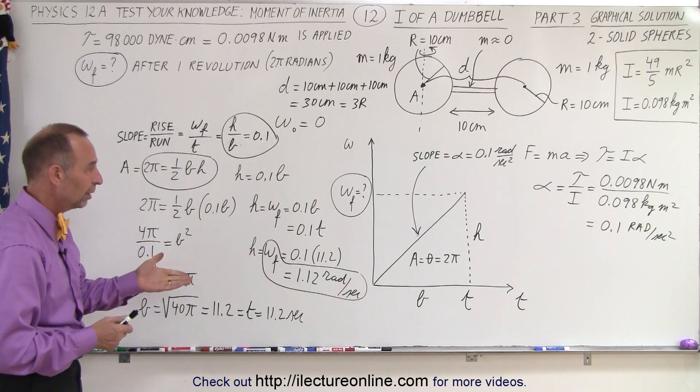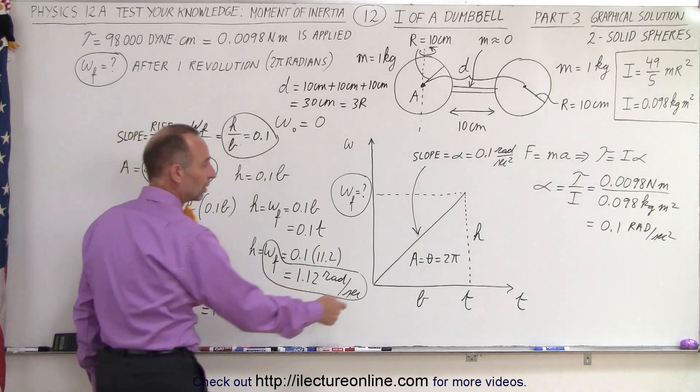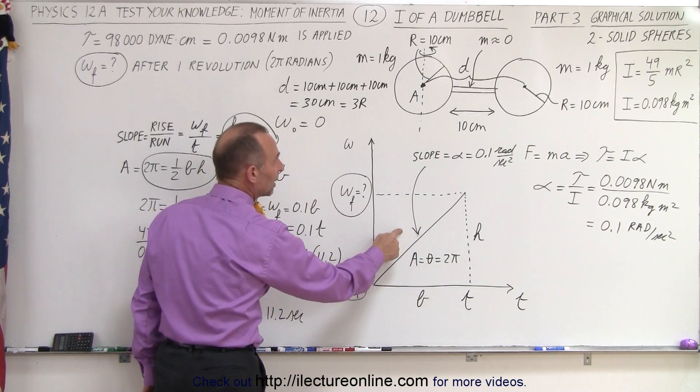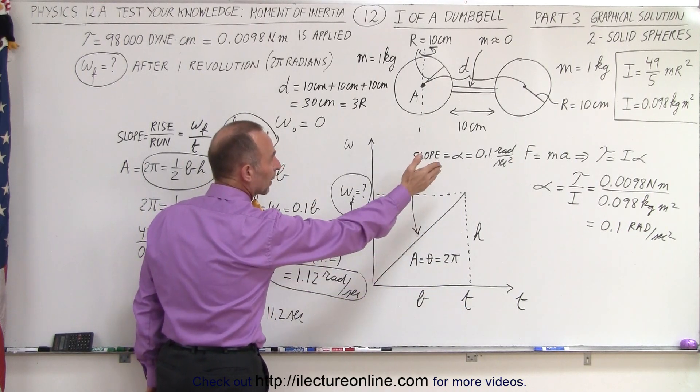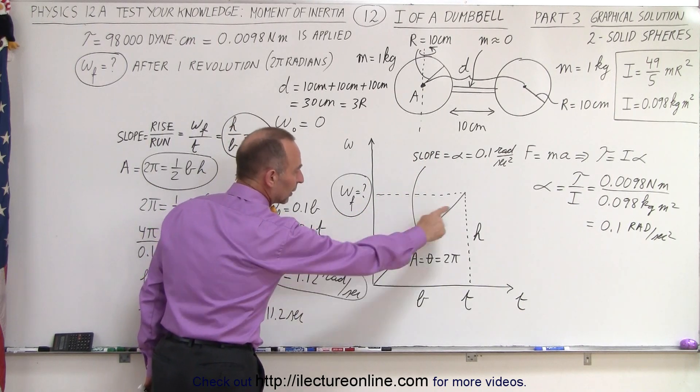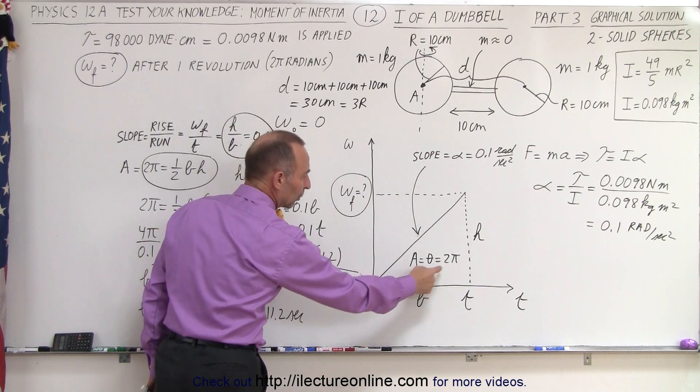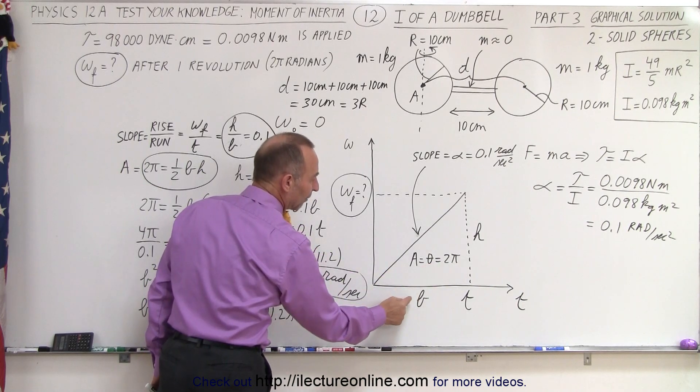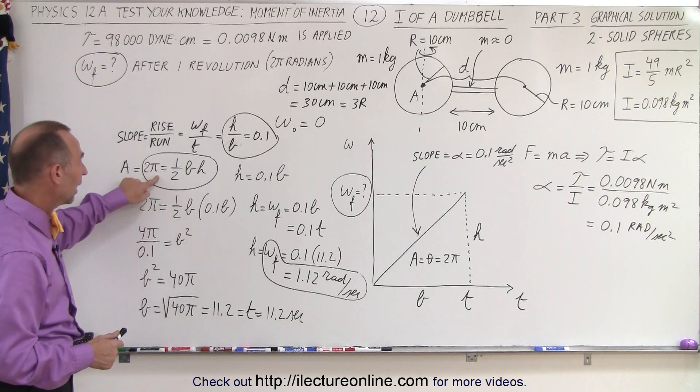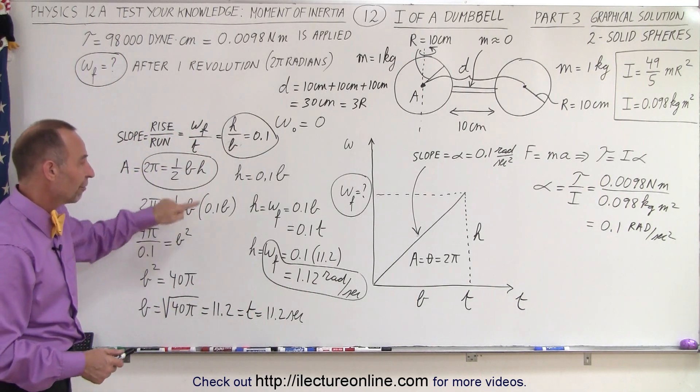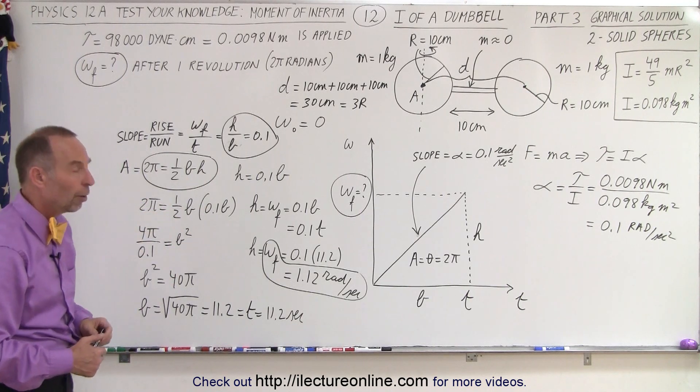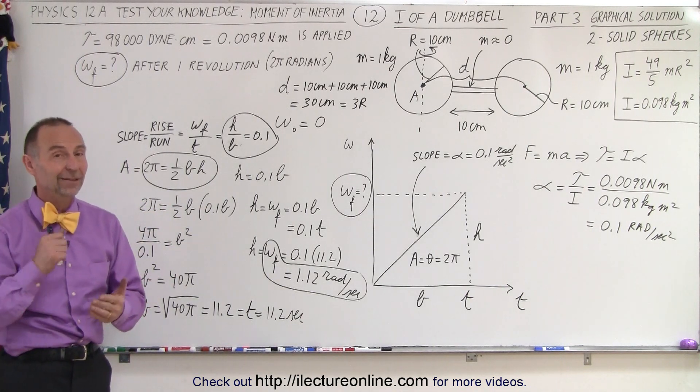So, you can see that graphically, we can find the solution just as well by using the concept that the slope in an omega versus time graph is equal to alpha, the angular acceleration, and the area is equal to one half the base times the height. Solving those two equations simultaneously, the area and the slope, we can solve for b and h, b representing the time, and h representing omega final, and that is how it's done.